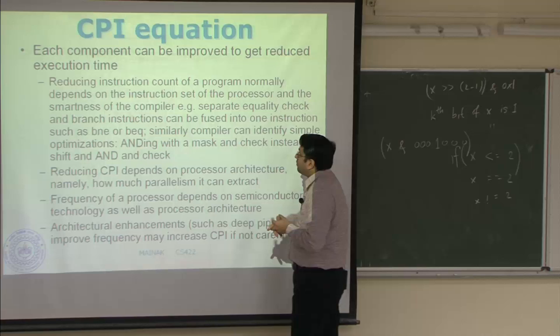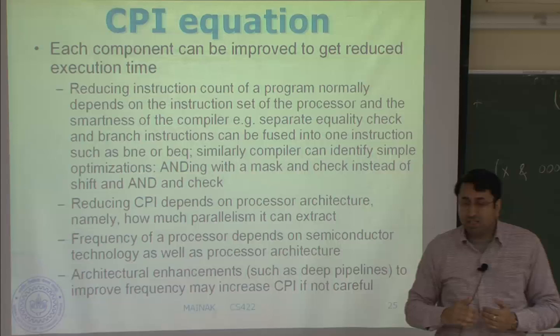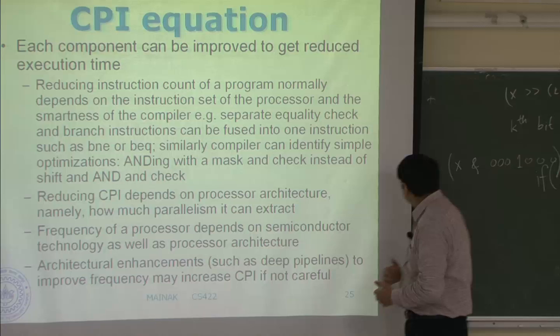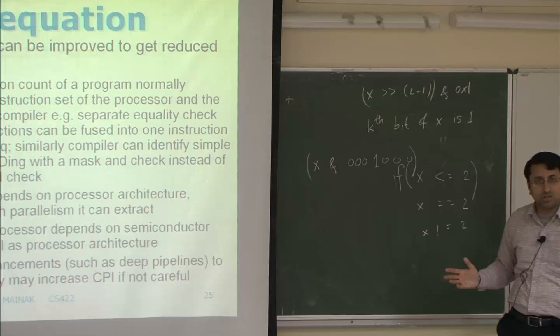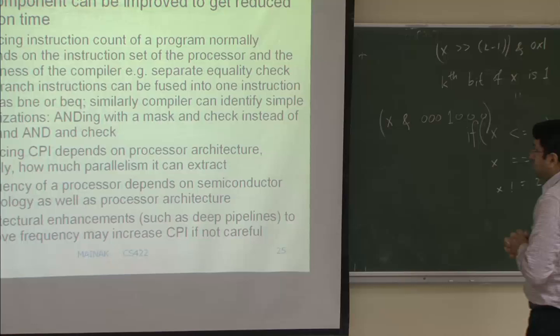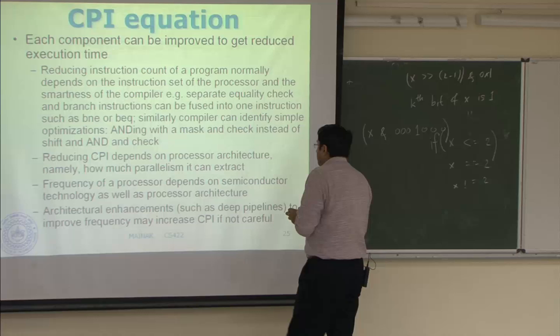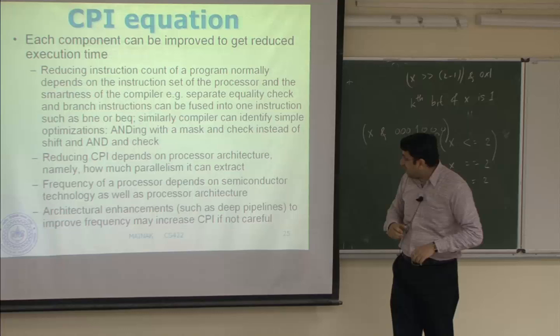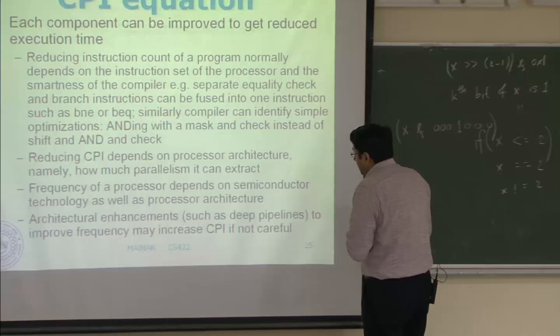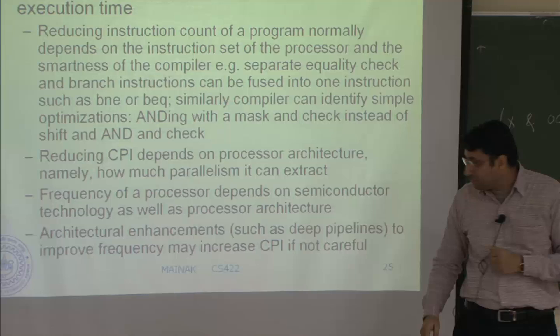We will talk about how to design an instruction set without increasing CPI too much, because there is a clear balance between instruction count and CPI. I can make very complicated instructions so that an entire if-block becomes one instruction, but then CPI will be very high. The second component is CPI, and the goal is to minimize it. Reducing CPI depends on processor architecture — namely how much parallelism you can exploit — and that will be the major portion of this course. Frequency depends on semiconductor technology as well as processor architecture.